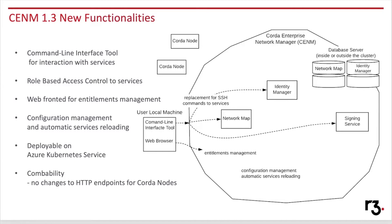The release has three main functionalities. The first is the command line interface tool, which replaces the direct SSH connection to each service. Access requires authentication and authorization against an internal CENM role-based access control. CENM administrators have a dedicated web page for defining users' entitlements. The last functionality is a way of changing service configuration via the CLI tool.